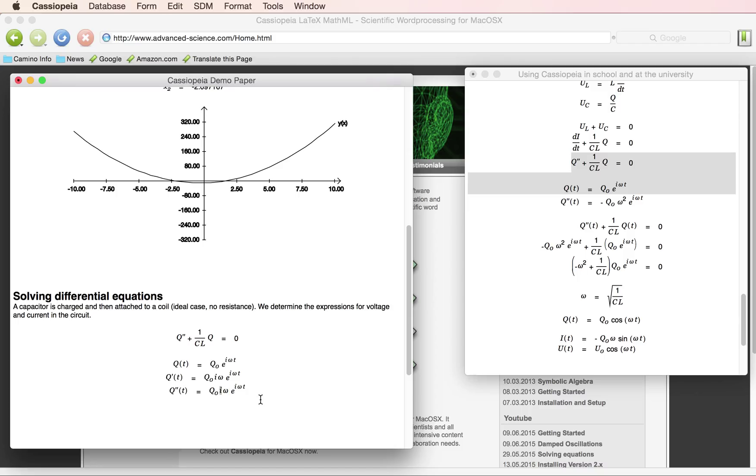We can combine these i's to minus and this becomes omega squared. And again, let's substitute by drag and drop.